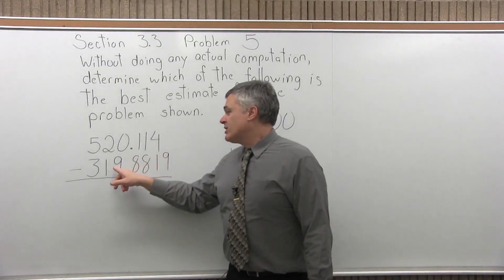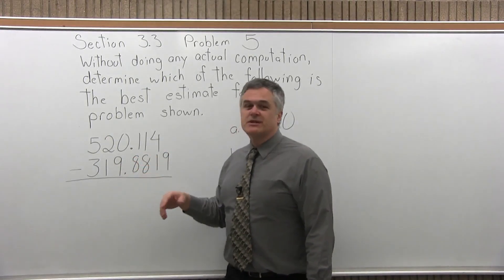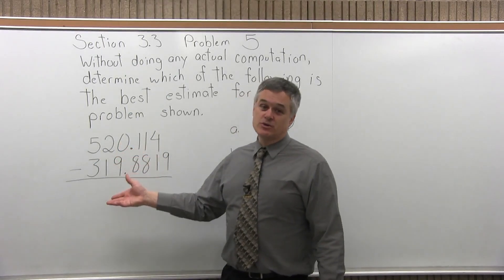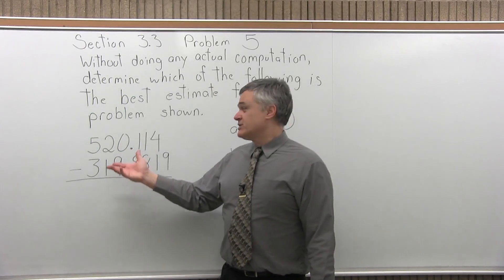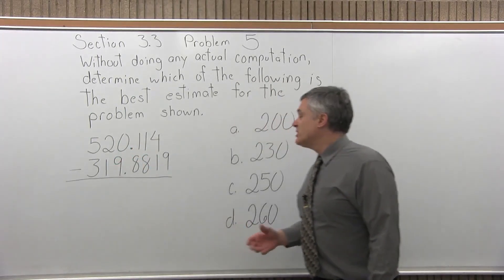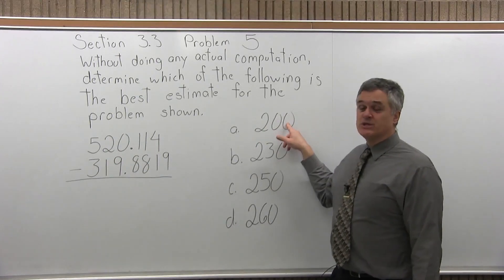So 319 point something, that's very close to 320. So 520 subtract 320, the 20s will cancel out. It's really going to be something like 500 minus 300. The answer will be very close to 200, which is one of the options.